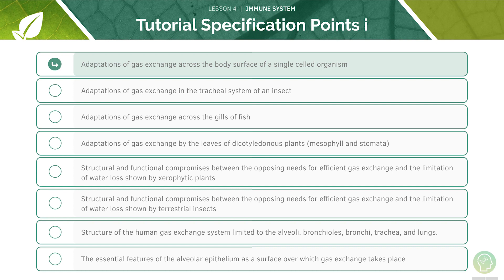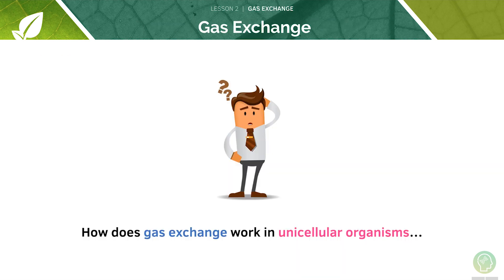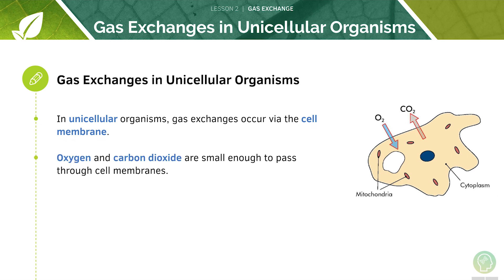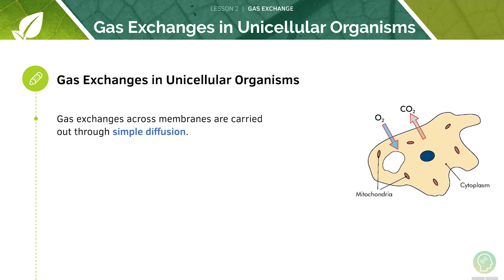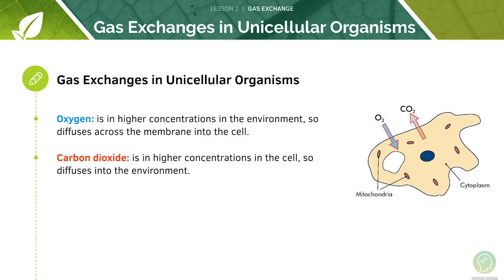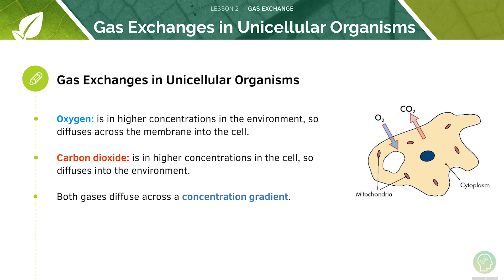We'll start with adaptations for gas exchange in single-celled organisms. In unicellular organisms, gas exchange occurs via the cell membrane. Oxygen and carbon dioxide are small enough to pass through cell membranes without any trouble. Gas exchange across membranes is carried out through simple diffusion. Oxygen, which is in a higher concentration in the environment, diffuses across the membrane into the cell, whilst carbon dioxide, which is in higher concentrations inside the cell, diffuses out into the environment. Both gases diffuse across a concentration gradient.